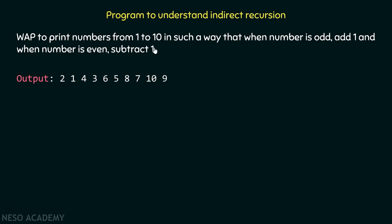So one becomes two because number one is odd. After that we encounter number two; as it is even, we subtract one, so it becomes one. Then we encounter three — as three is odd, we add one, so it becomes four. Then we encounter four, which is even, so we subtract one and it becomes three. This is how we need to progress, and this is the expected output.